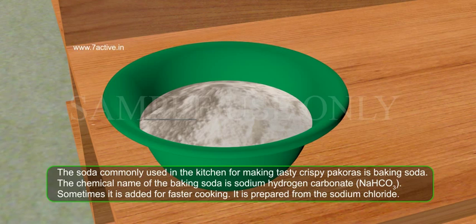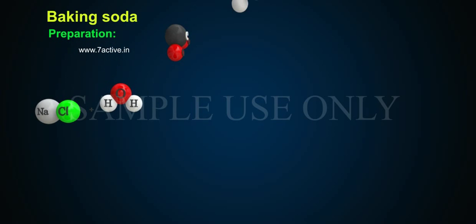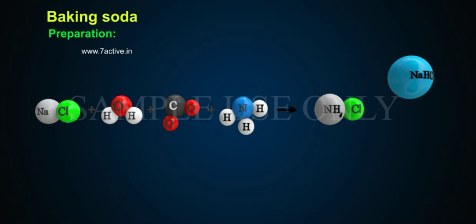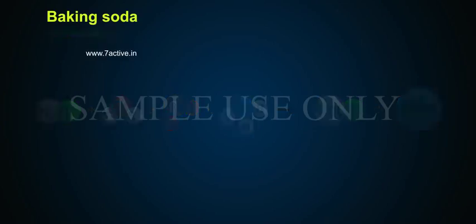Baking soda is prepared from sodium chloride. NaCl plus H2O plus CO2 plus NH3 gives NH4Cl plus NaHCO3.